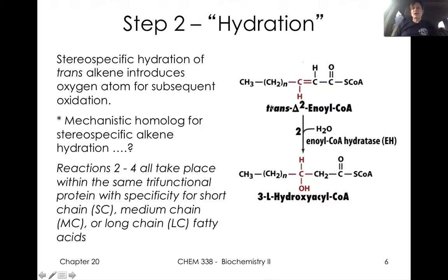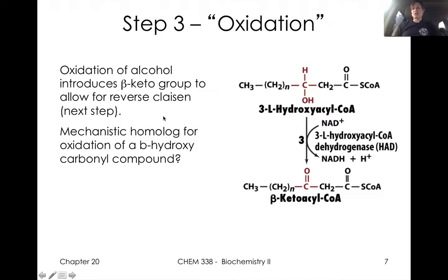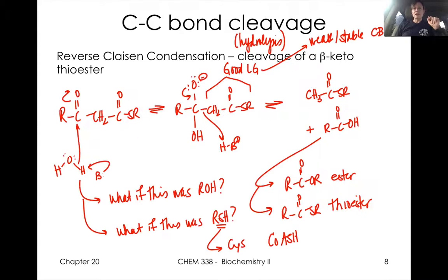The next step is this hydration chemistry — we have this trans-alkene hydrated to an alcohol. We'll talk about some mechanistic homologues that we've seen for these different enzymes. The third step is then oxidation — taking this alcohol and oxidizing it to a carbonyl. That chemistry utilizes NAD+ as its oxidizing species. We'll see mechanistic homologues to chemistry that we saw in the citric acid cycle.